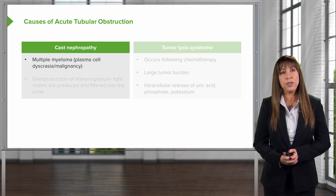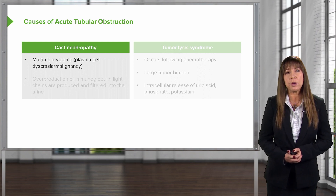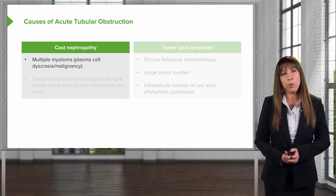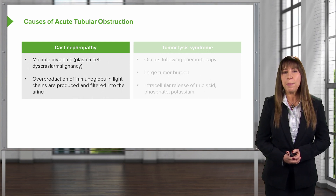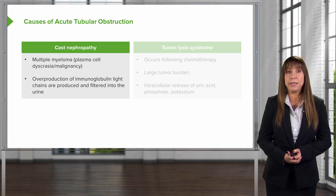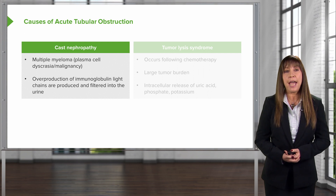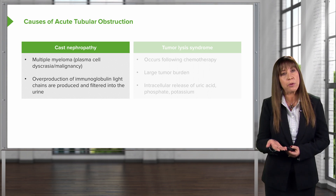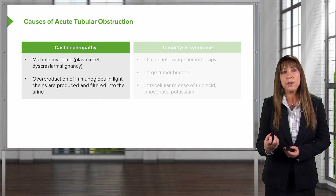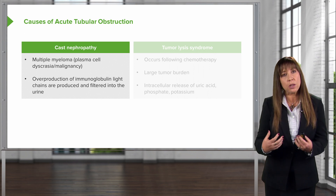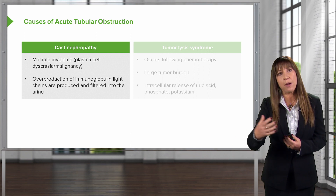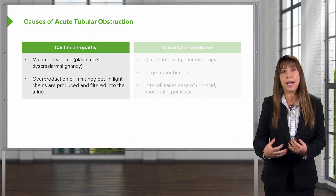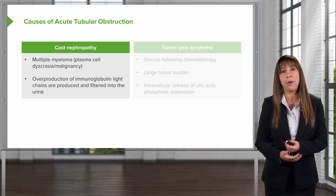Our patient might develop acute tubular obstruction from cast nephropathy. This typically occurs when patients have plasma cell dyscrasia or malignancies like multiple myeloma. In multiple myeloma, patients have an overproduction of monoclonally restricted immunoglobulin light chains. They are produced in such quantity that it burdens the kidney. The kidney normally can reabsorb those immunoglobulins in the proximal tubule, but there's so much that it starts to clog up those tubules. Combined with Tamm-Horsfall protein, this essentially obstructs the outflow of urine.